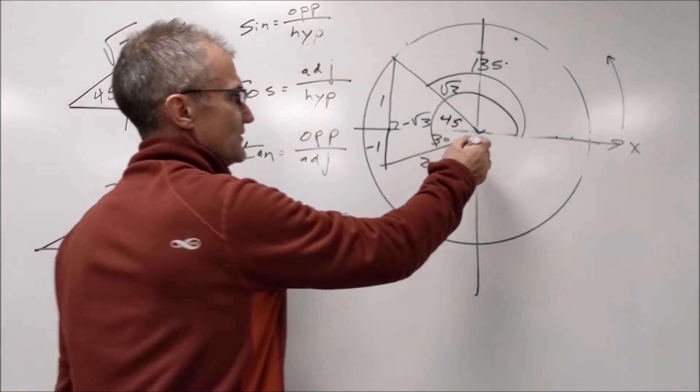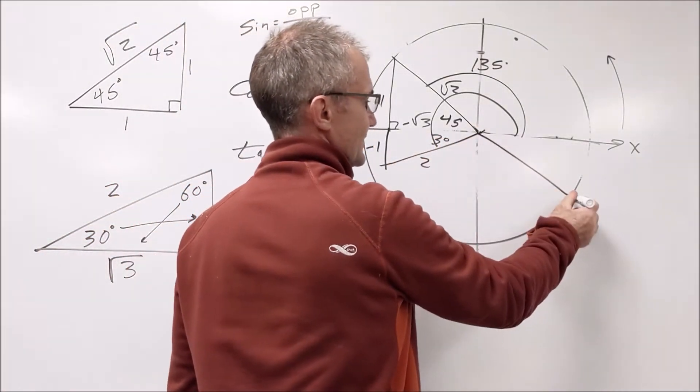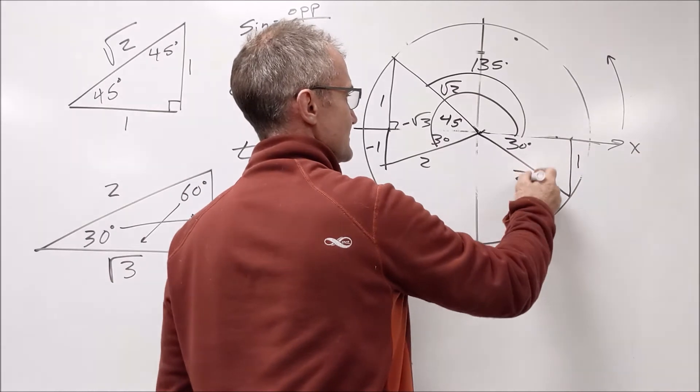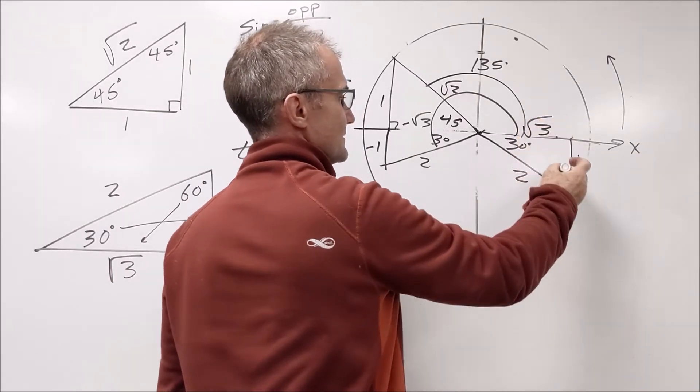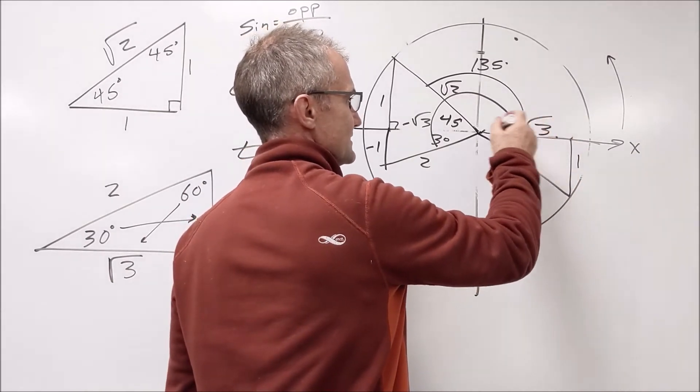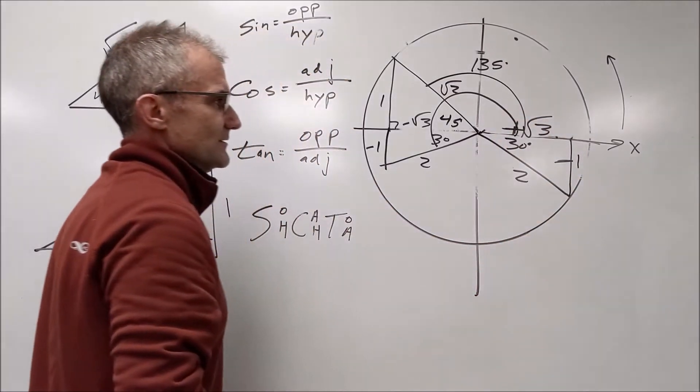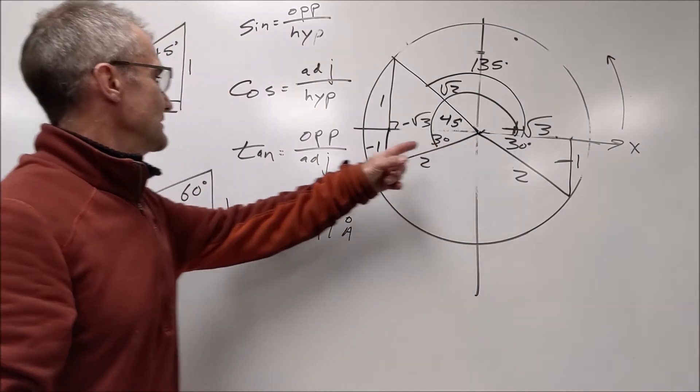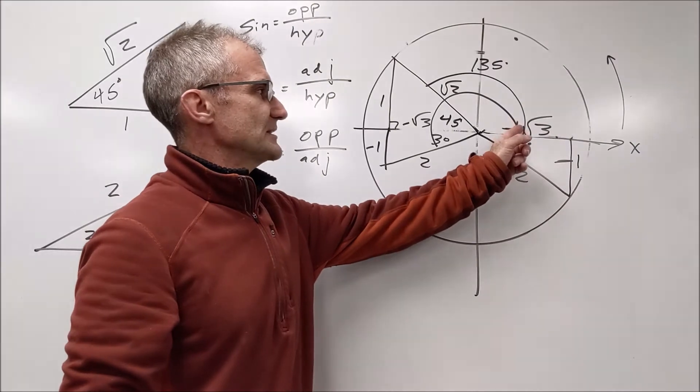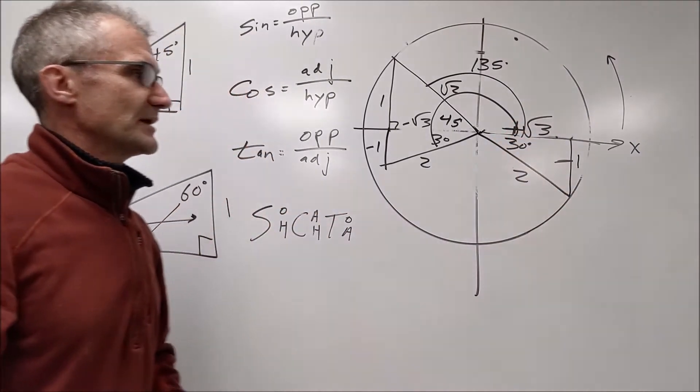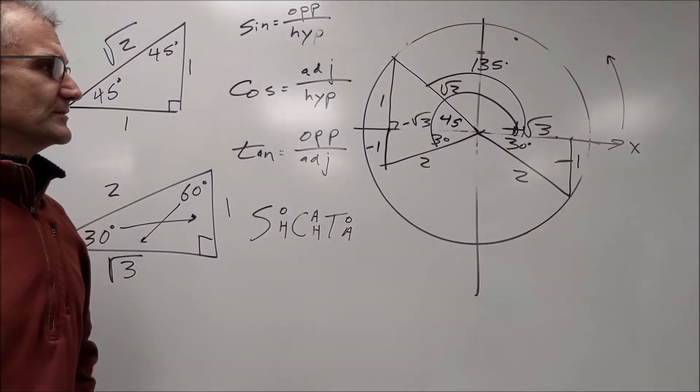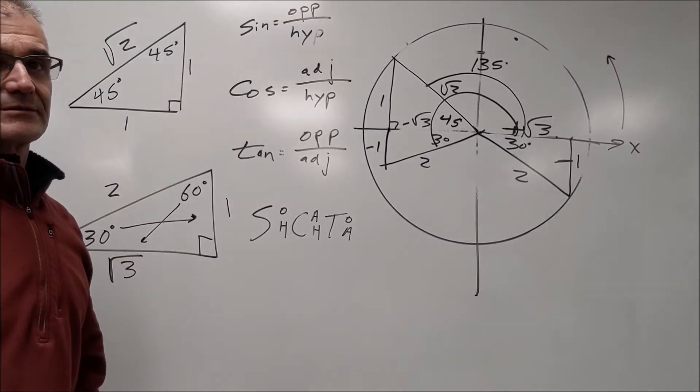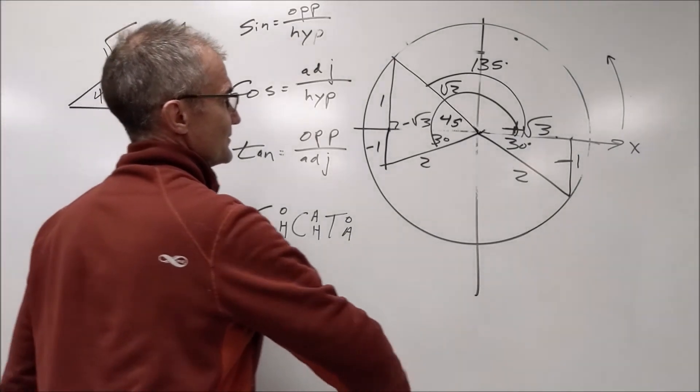Tangent of 330. There's your angle. Your reference angle is 30: 1, 2, root 3. This is a negative. No, this is a positive over positive down negative. What did I say? I said tangent of 330. You go back to your tangent, opposite over adjacent, negative 1 over positive root 3. Tangent of 330 is negative 1 over root 3. You with me there? So those are exact value problems in degrees.